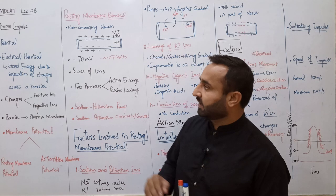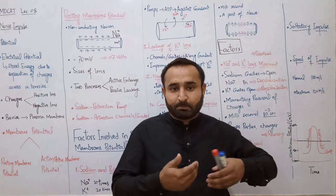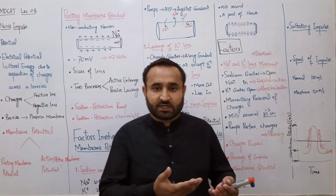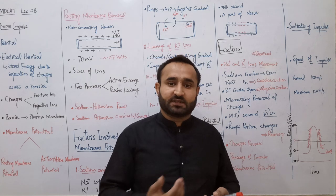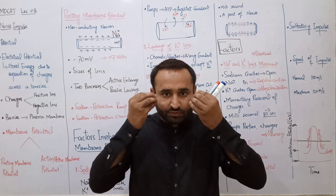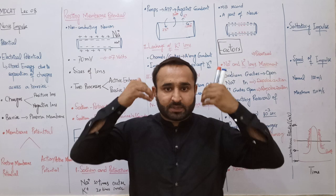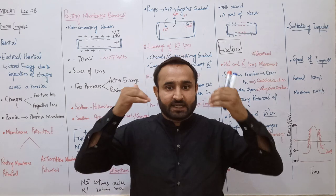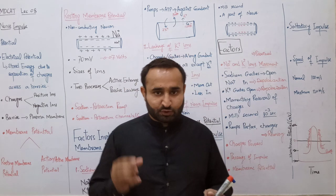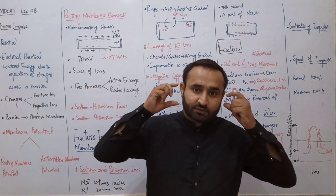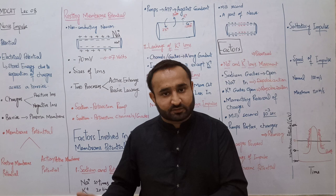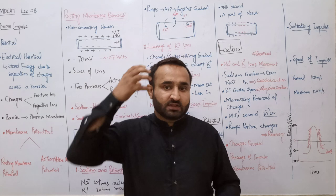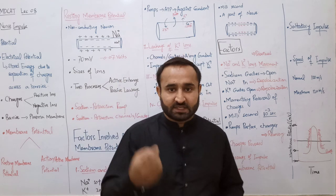First of all, nerve impulse - impulse کا مطلب ہے sudden message، quick message، اچانک جو message منتقل ہوتا ہے اس کو impulse کہتے ہیں۔ Nerve impulse basically وہ electrical signal ہے جو ہم آنکھوں سے دیکھتے ہیں وہ brain تک optic nerve کے ذریعے جاتی ہے۔ ہمارے pain receptors، heat receptors، cold receptors جو skin میں ہیں وہ brain تک message nerve impulse کی شکل میں لے جاتے ہیں۔